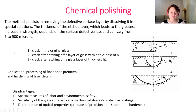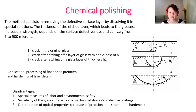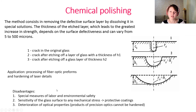The main disadvantage of chemical polishing is that special labor and environmental safety measures are required because we are working with acids, and the glass surface is sensitive to any mechanical stress. We should prevent damage by using protective coatings. After chemical polishing, degradation of optical properties sometimes occurs.